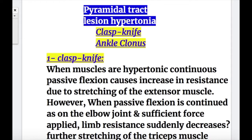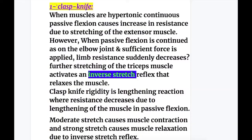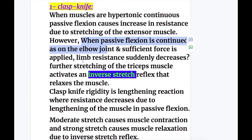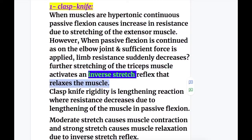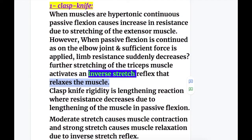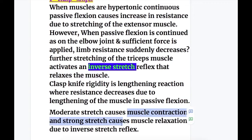Now let's discuss pyramidal tract lesion hypertonia, which includes clasp knife and ankle clonus. Number one, clasp knife rigidity: when muscles are hypertonic, continuous passive flexion causes an increase in resistance due to stretching of the extensor muscles. However, when passive flexion is continued at the elbow joint and sufficient force is applied, limb resistance suddenly decreases. This is because further stretching of the tricep muscle activates an inverse stretch reflex that relaxes the muscle. Clasp knife rigidity is a lengthening reaction where resistance decreases due to lengthening of the muscle in passive flexion. Moderate stretch causes muscle contraction and strong stretch causes muscle relaxation due to activation of the inverse stretch reflex.